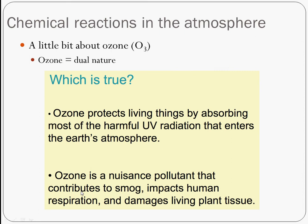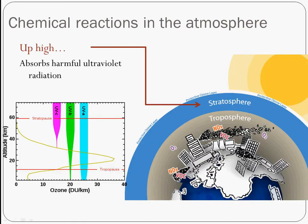Ozone is one of the pollutants we care a lot about, and it has different consequences depending on where it is — it has a dual nature. Up high in the stratosphere, ozone absorbs harmful UV radiation. This diagram shows the concentration of ozone throughout the troposphere and stratosphere. The ozone layer is represented here in the stratosphere.